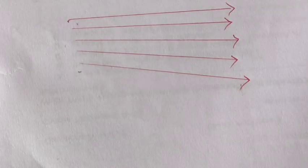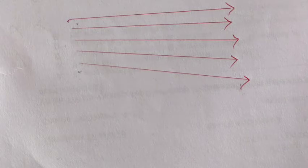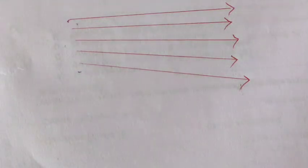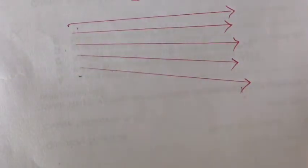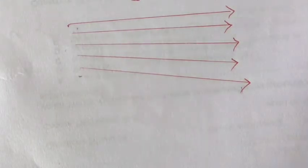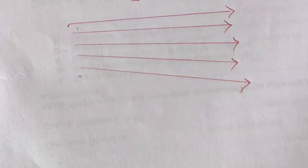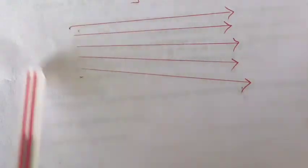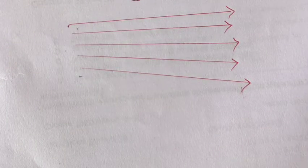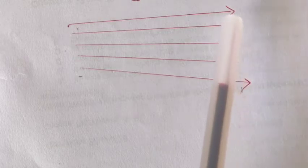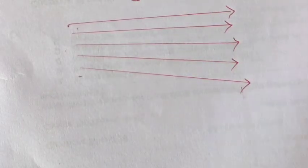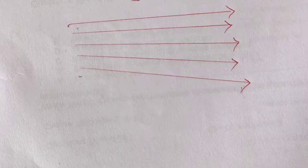This illustrates a non-uniform electric field. We can clearly see that the lines are not equidistant. Where lines are crowded, it shows a strong electric field, and where lines are far away from each other, it describes a weak electric field.